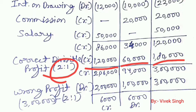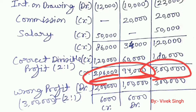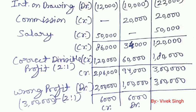After distributing the divisible profit, we total the credit balances for both partners. The new credit balances are A: 2,06,000 and B: 94,000, totalling 3,00,000. However, 3,00,000 is the wrong profit that was distributed before any adjustments — before charging interest on capital, interest on drawings, commission, and salary. The correct profit is only 1,80,000, but 3,00,000 was distributed.